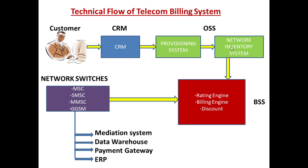Under OSS, there are mainly two parts: the Provisioning System and the Network Inventory System. The Provisioning System takes the order or command from the CRM, and according to the activation, deactivation, termination, or suspension requested by the customer, its provisioning is done. After successful provisioning — meaning the actual implementation of that particular request — it sends a response back to the CRM.